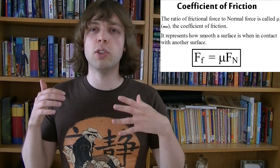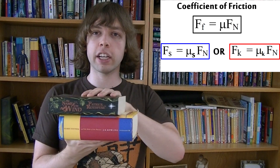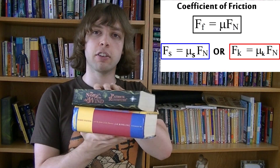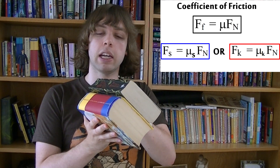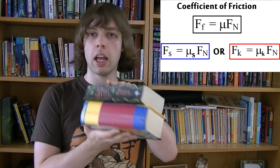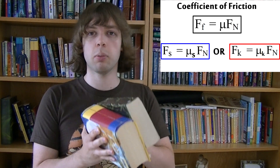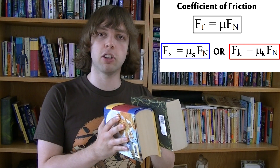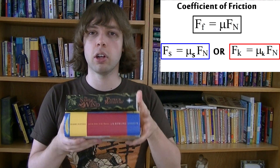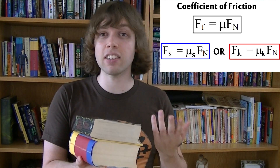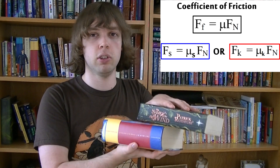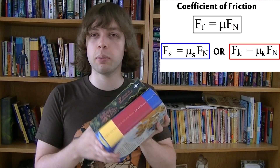It's important to realize that you can use this equation for both static friction and kinetic friction. When any two surfaces are in contact with each other, there will be a coefficient of static friction between those surfaces — it represents how rough they are and how hard it is to get one object moving against the other. There will also be a coefficient of kinetic friction, which represents how hard it is to keep the objects moving against each other. If you use the equation with the coefficient of static friction, you're calculating the static frictional force; if you use it with the coefficient of kinetic friction, you'll calculate the kinetic frictional force. The normal force Fn is the same either way.